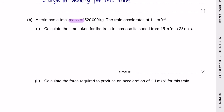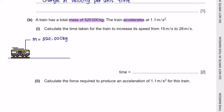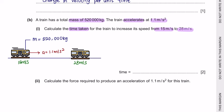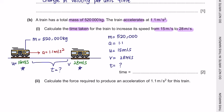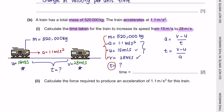Question B. A train has a total mass of 520,000 kg and accelerates at 1.1 m/s². Calculate the time taken to increase its speed from 15 m/s to 28 m/s. Using a = (v − u)/t and rearranging to t = (v − u)/a = (28 − 15)/1.1, we get 11.8 s, which rounds to 12 s.